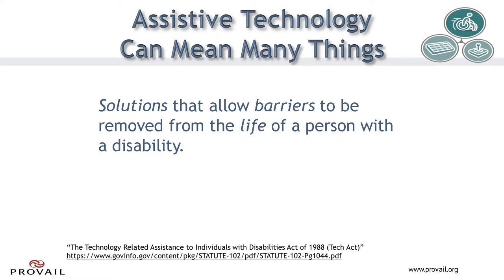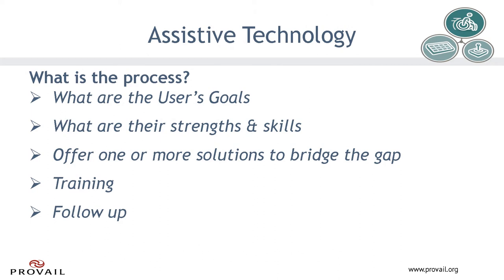These are all solutions that allow barriers to be removed from the life of a person with a disability. The ideal process for obtaining assistive technology is as follows: determine what the goals are of the user, figure out what their current strengths and skills are, then offer one or more solutions to bridge the gap between the skills they have and where they need to get to. Provide training on the equipment or solution to both the client and possibly caregivers and family. And then, a few weeks later, provide follow-up to see how well the solution has been implemented and working for the client.